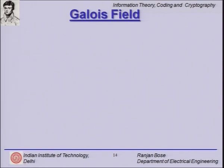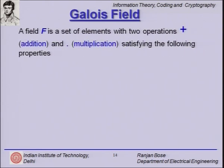We now move ahead to answer the basic question of how we define addition, and for that we need a brief introduction to Galois fields. A field F is a set of elements with two operations, addition and multiplication, satisfying the following properties.